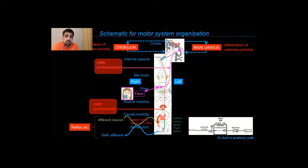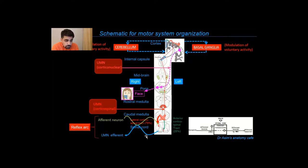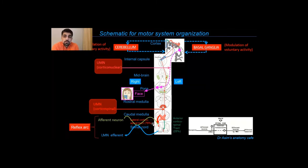When someone has an upper motor neuron lesion anywhere in the central nervous system, that results in the loss of inhibition, causing hyperexcitability of the reflex arc. This is why an upper motor neuron lesion presents with spastic paralysis — there is still weakness, but on clinical neurological examination you see hyperreflexia and hypertonia, unlike a lower motor neuron lesion where weakness is associated with hypotonia and hyporeflexia.